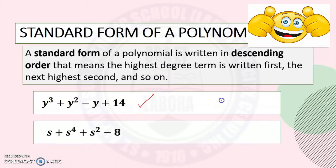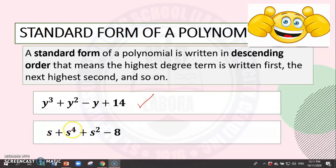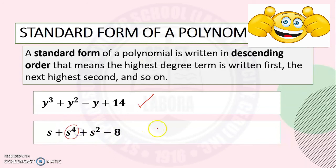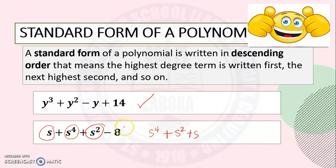How about this one: s plus s exponent 4 plus s squared minus 8? To write this in standard form, we arrange the terms in descending order. So s exponent 4 is written first, followed by s squared, then s, and the last is the constant negative 8. This polynomial is now written in standard form.